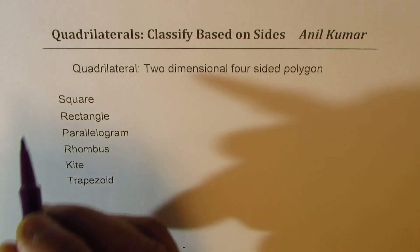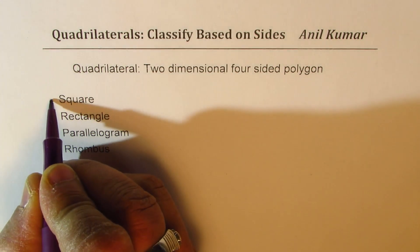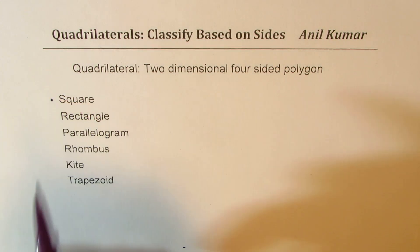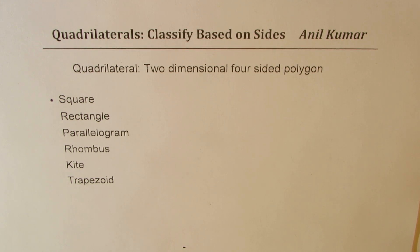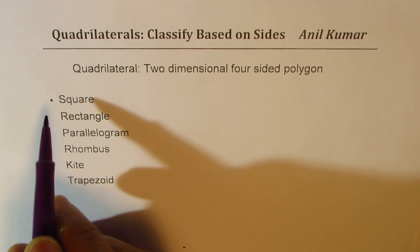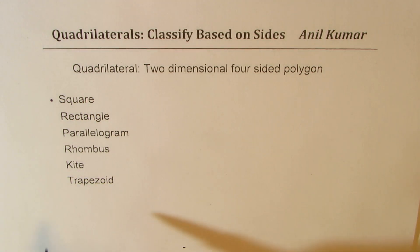Here are a few names which we use for these four-sided figures: square, rectangle, parallelogram, rhombus, kite, and trapezoid. So these are all very special four-sided figures or quadrilaterals. Let's talk about them one by one.